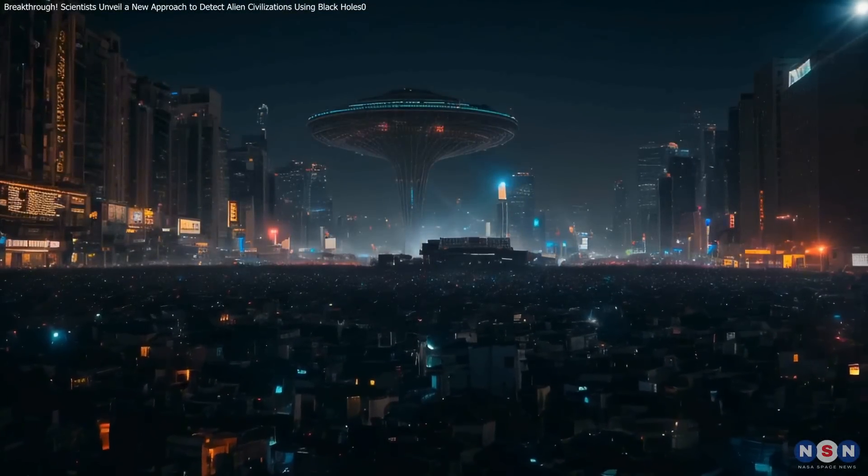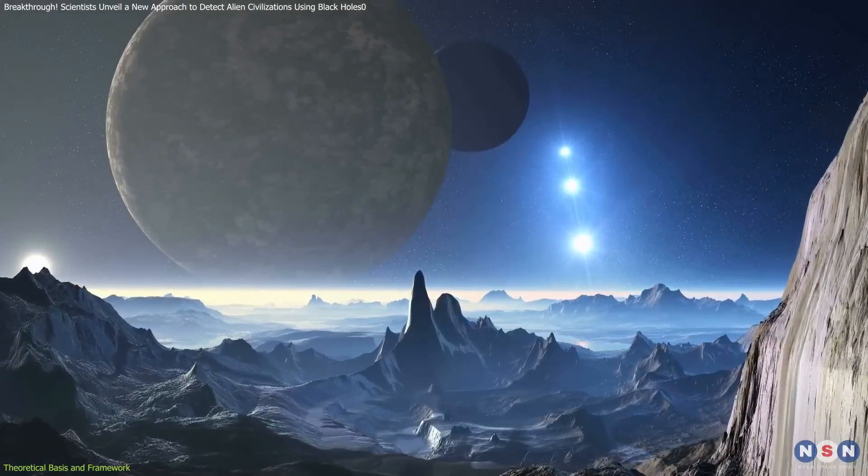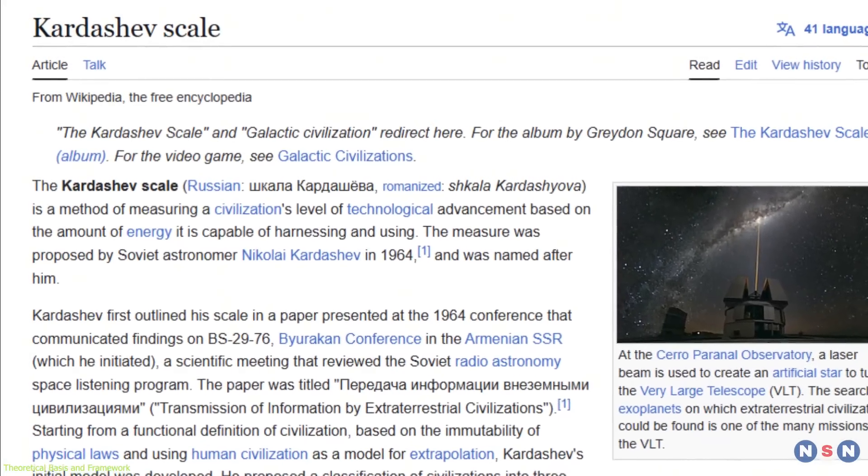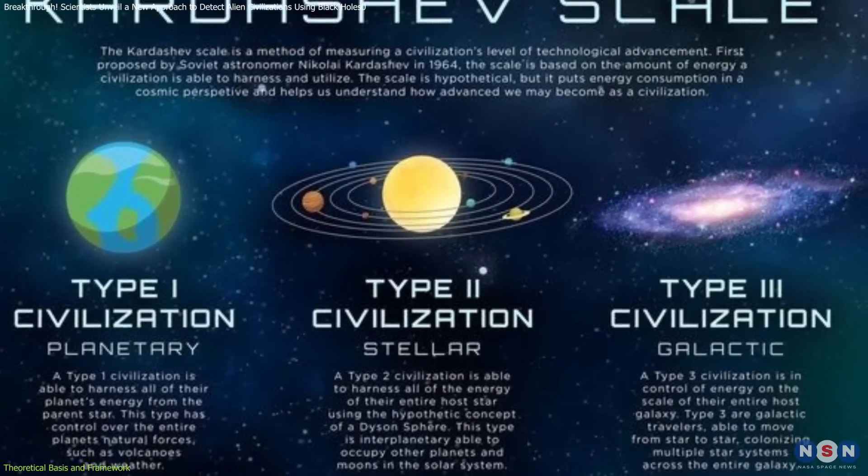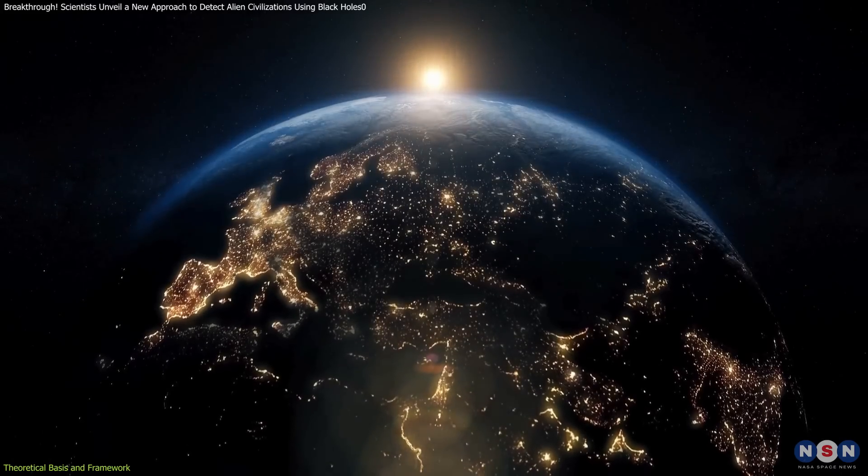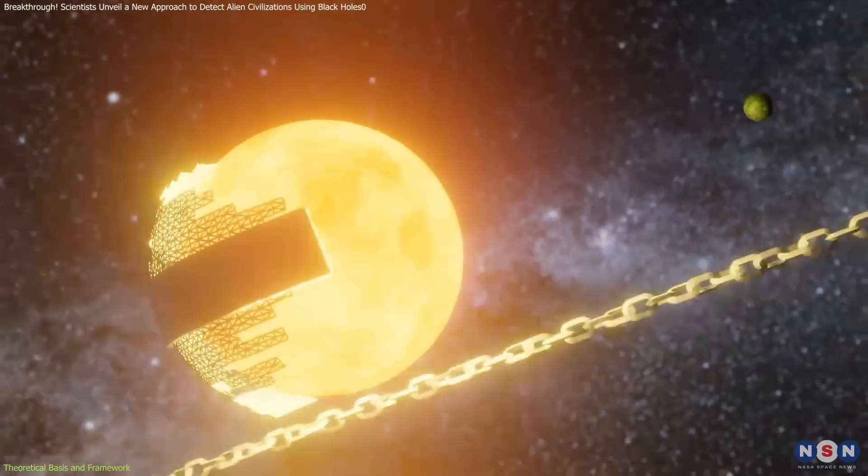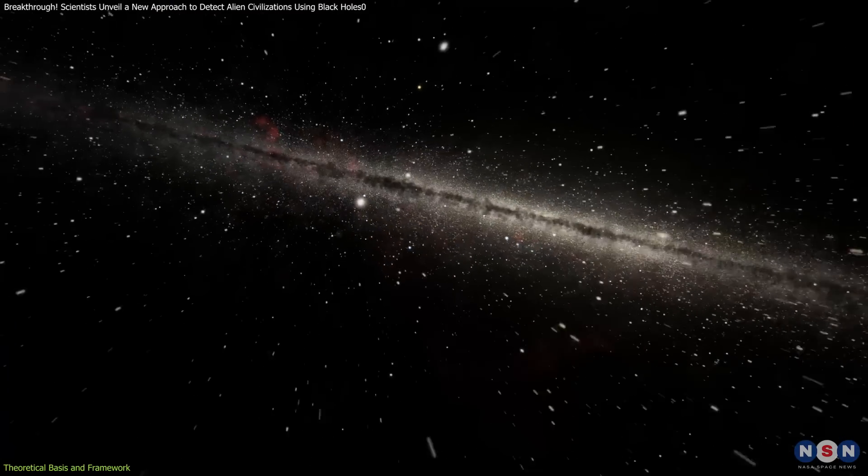Civilizations grow alongside their energy needs, and advanced civilizations would require energy on an astronomical scale. This concept forms the foundation of the Kardashev Scale, proposed by Russian astrophysicist Nikolai Kardashev in 1964. The scale categorizes civilizations based on their energy consumption. Type I civilizations harness planetary energy, Type II civilizations capture stellar energy, and Type III civilizations control galactic energy.